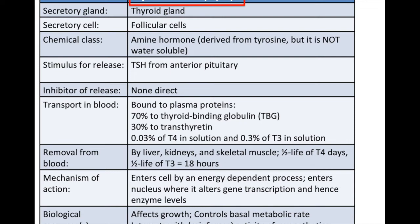It has a fairly long half-life of about 18 hours. Its mechanism of action is to go into cells via an energy-dependent process and activate transcription of many genes. It affects growth but mainly controls your basal metabolic rate — the more thyroid hormone you have, the more energetic your body is. Because of this, it reinforces the activities of sympathetics, which supply the energy, and thyroid hormone allows you to use it.